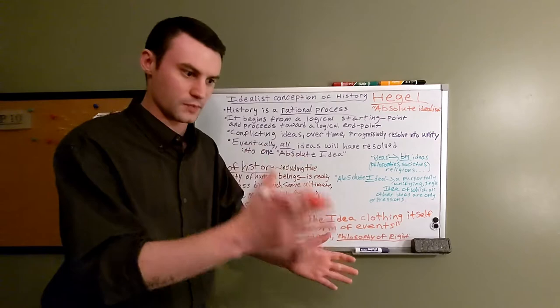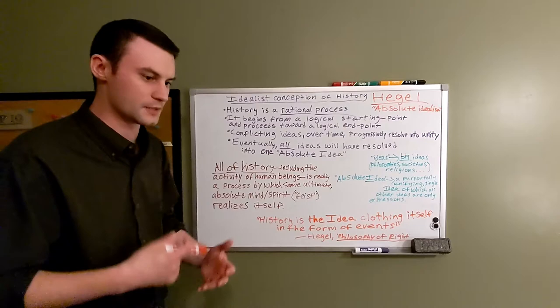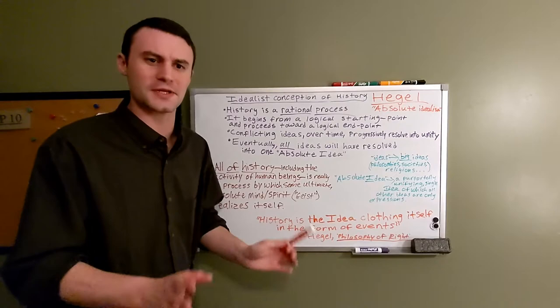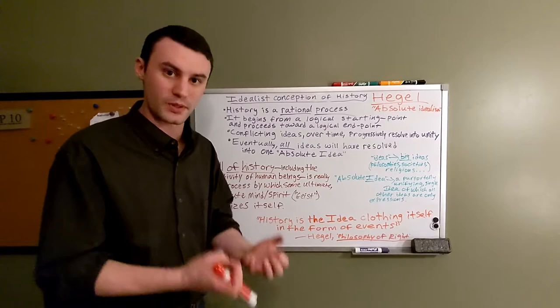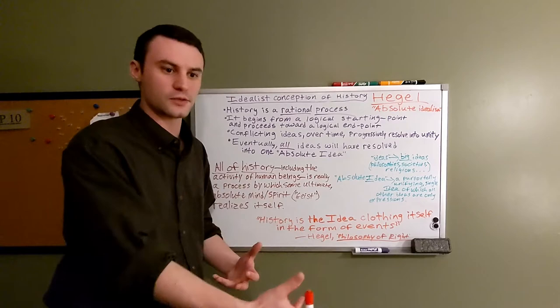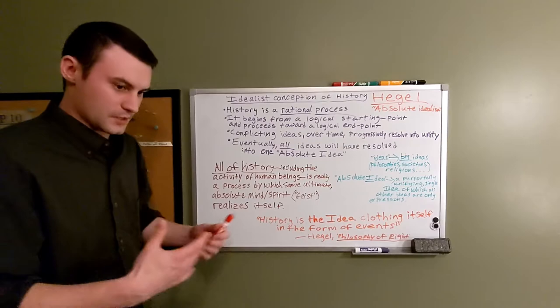Between the beginning and the end, you have conflicts between ideas. What kind of ideas are we talking about? When Hegel talks about conflicts between ideas, think big ideas: philosophies, philosophical schools, religions, societies, systems of government, ideals, values of a culture or a nation.